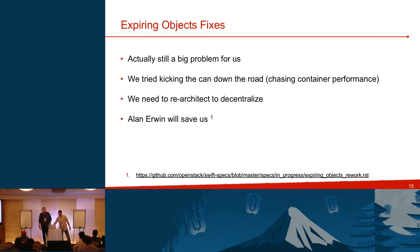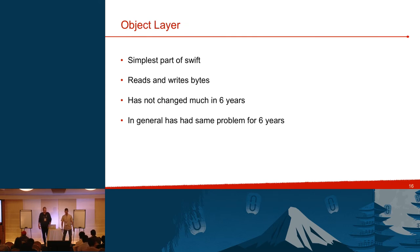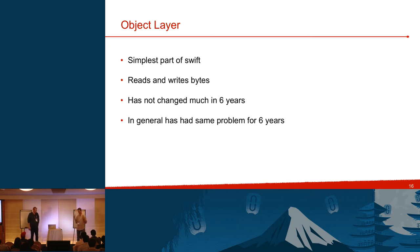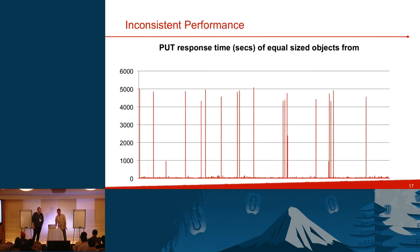Moving on to the object layer — the bread and butter of Swift. It's the simplest part: it sits on top of object servers and reads and writes bytes. It hasn't changed much in the last six years. And it has had the same general problem for six years, which gets worse as your scale increases: inconsistent performance.